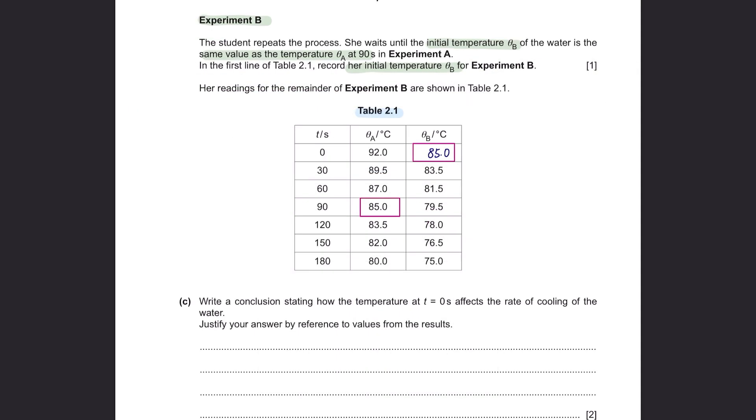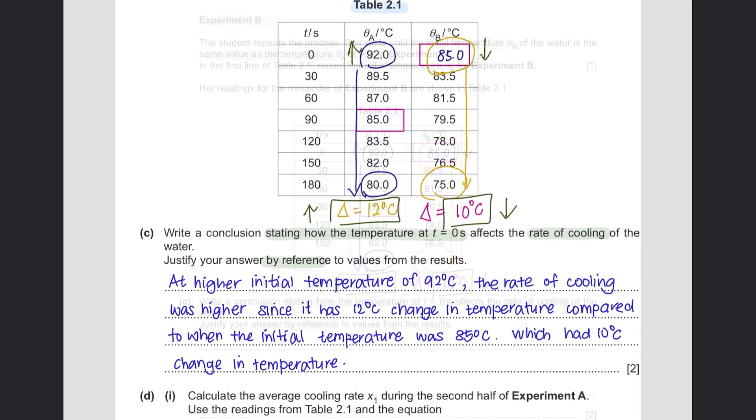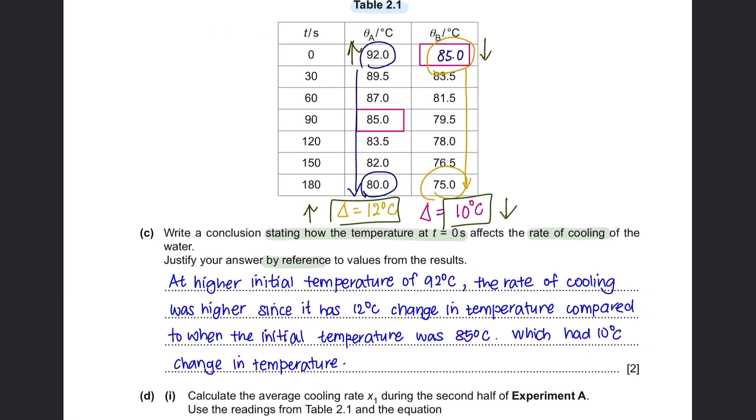Part C, write a conclusion stating how the temperature at time 0 affects the rate of cooling of the water. Justify your answer by reference to values from the results. For experiment A, the temperature started at 92 degrees Celsius and after 180 seconds, it was 80 degrees Celsius. This means that the change of temperature was 12 degrees Celsius. Whereas for experiment B, it started at 85 degrees Celsius and after 180 seconds, it became 75 degrees Celsius. So the change of temperature here is 10 degrees Celsius. This tells us that when the initial temperature is high, the change of temperature is higher. Compared to when the initial temperature is lower, the change of temperature is also lower. You could use these differences to write your conclusion and justify your answer.